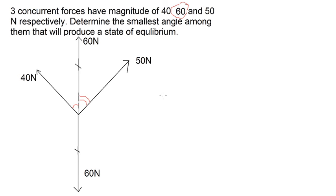We know that to find the smallest angle, the side of the triangle opposite to that angle should be the smallest. That's why we have 40 newtons here. So we will work on this angle on the right.